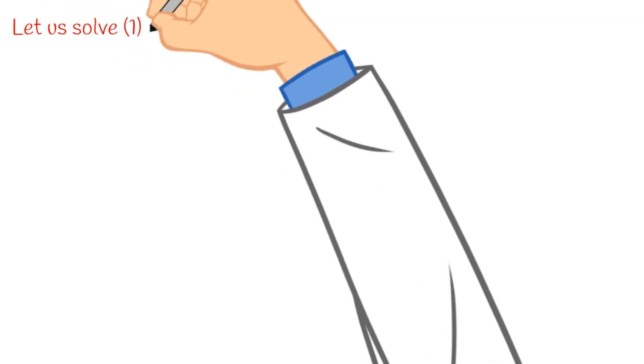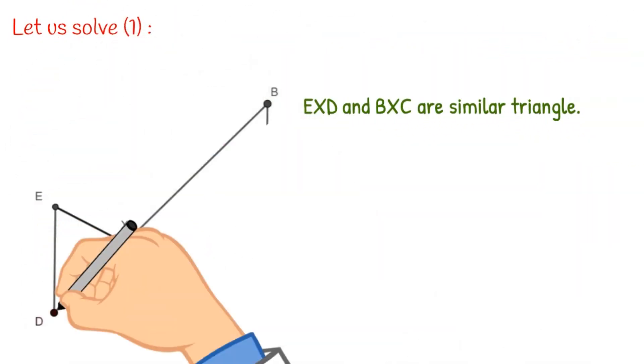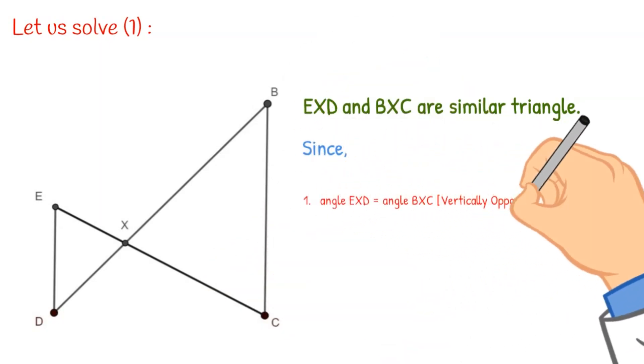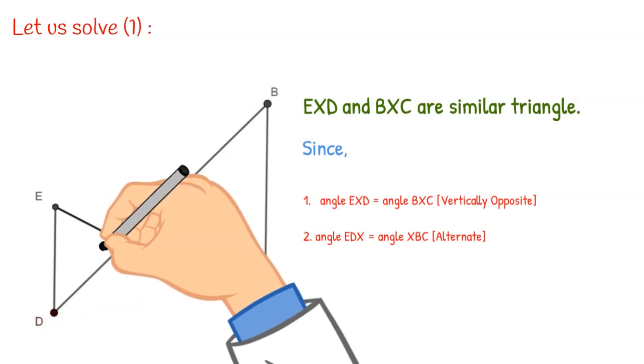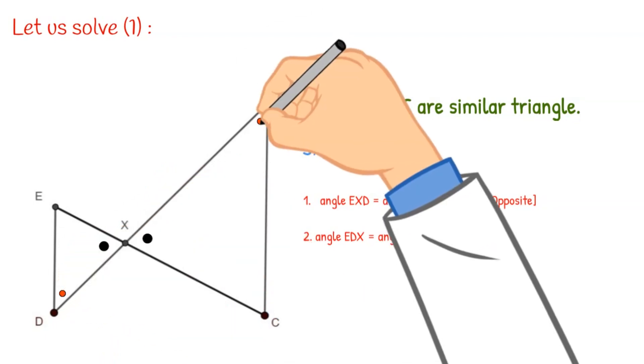Step one is to show the triangles EXD and BXC are similar triangles. This is actually very easy because we have vertically opposite angles which are EXD and BXC, and two alternate angles which are EDX and XBC.